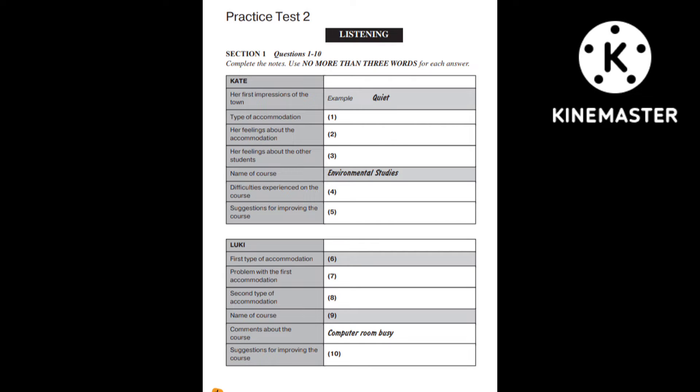Practice Test 2. You will hear a number of different recordings and you will have to answer questions on what you hear. There will be time for you to read the instructions and questions, and you will have a chance to check your work. All the recordings will be played once only. The test is in four sections. Write all your answers in the listening question booklet. At the end of the test, you will be given ten minutes to transfer your answers to an answer sheet.